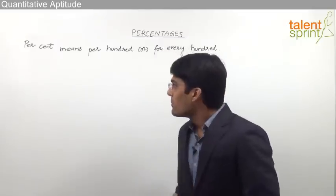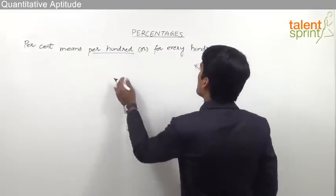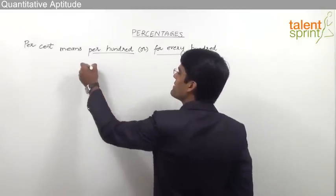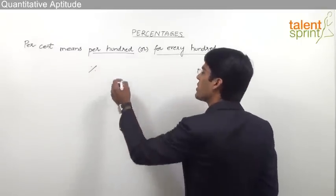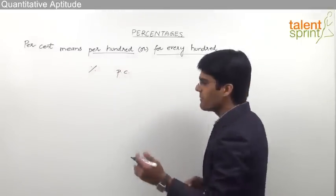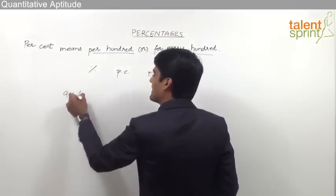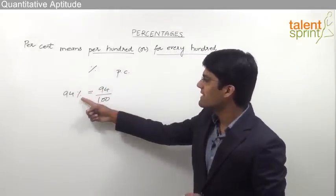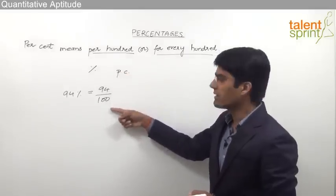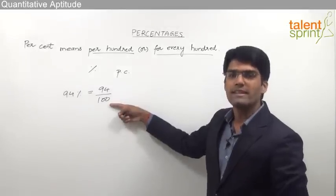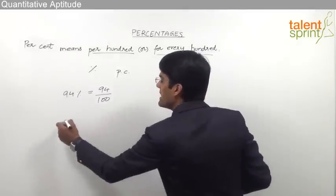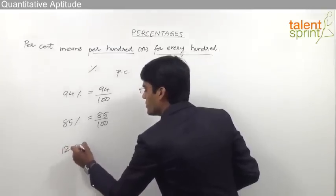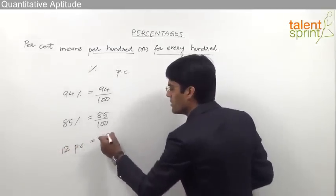Let us first understand what is meant by a percentage. Percent means per hundred, or for every hundred, that is nothing but out of every hundred. Percentage is denoted by the symbol shown here, and in short it can be taken as PC which means percent. For example, 94 percent is nothing but 94 out of hundred. Similarly, when we say 85 percent it means 85 out of hundred, or 12 percent means 12 out of hundred.